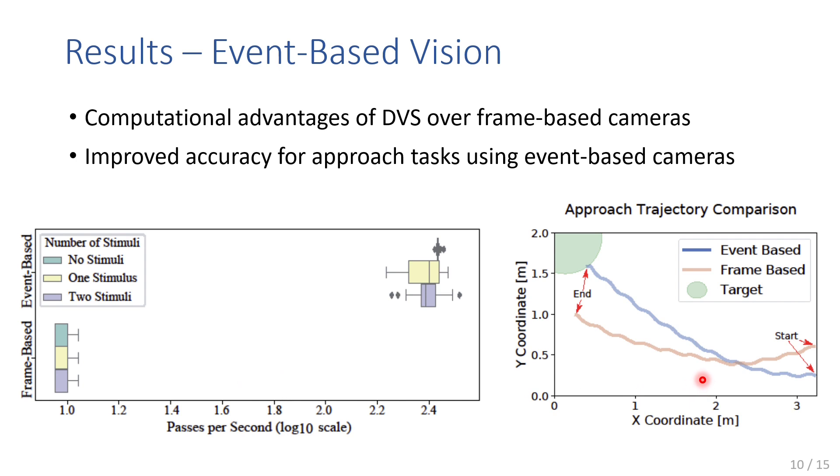The figure on the right shows the trajectories for two approach trials using both types of camera. What is obvious is that in these two trials at least, use of the event-based camera resulted in a trajectory that led to a head-on collision with the target, while the frame-based camera produced a small amount of overshoot. To conduct a more rigorous comparison, we needed a metric to characterize how good or bad any given approach trial was.